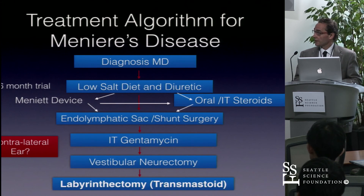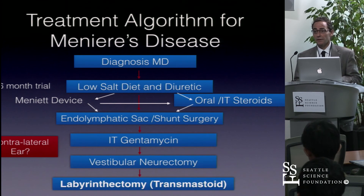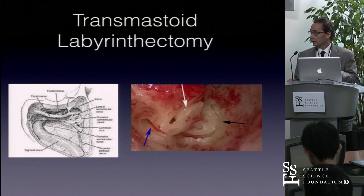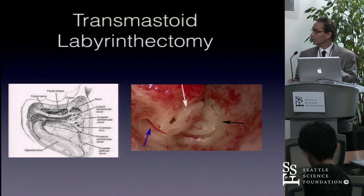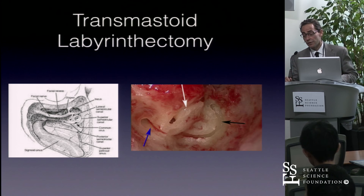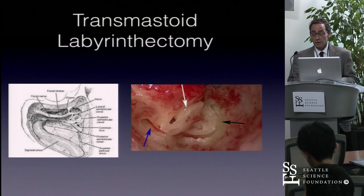At this point, we discussed consideration for a labyrinthectomy. The patient had severe hearing loss with a decreased word recognition score of 36%. The transmastoid labyrinthectomy demonstrated the superior, lateral, and posterior semicircular canals, with the sigmoid sinus shown prominently. The bone was removed along with the dural plate. The neuroepithelium was removed with a right-angle hook, and gel foam soaked with gentamicin was placed into the semicircular canals.